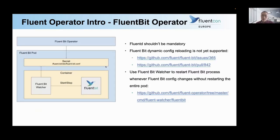Why did we create FluentBit Operator in the first place? Before we created this project, we had found the logging operator. But logging operator has one problem: the logs have to go through from FluentBit to Fluentd before reaching their final destinations. That means Fluentd is a mandatory choice in logging operator. That might cause some problems in some cases. For example, if your cluster has hundreds of nodes and all the logs have to go through from FluentBit to Fluentd, then Fluentd might become the bottleneck — it might become the single point of failure.